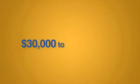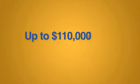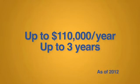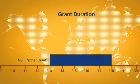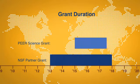Peer science grants range from $30,000 to $60,000 a year. More complex projects, which typically involve multiple institutions, can request up to $110,000 per year for up to three years. Your peer science research project must be a minimum of one year and a maximum of three years.